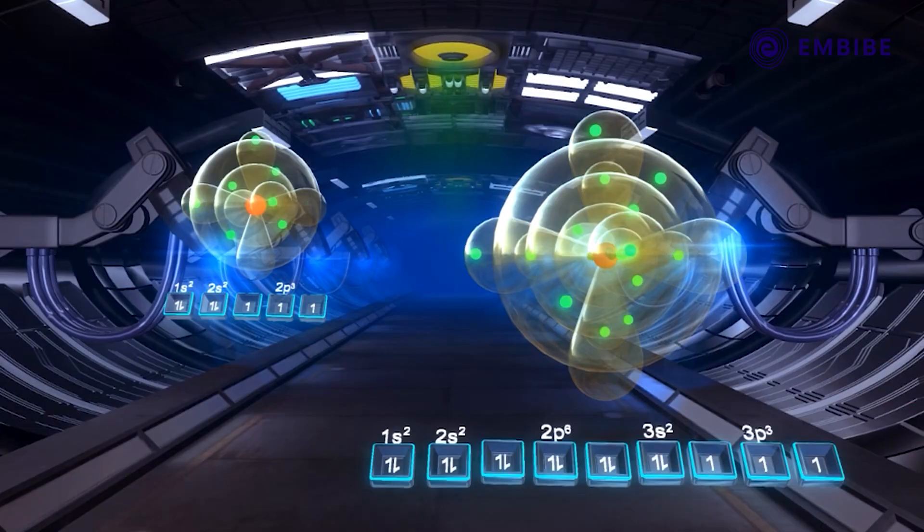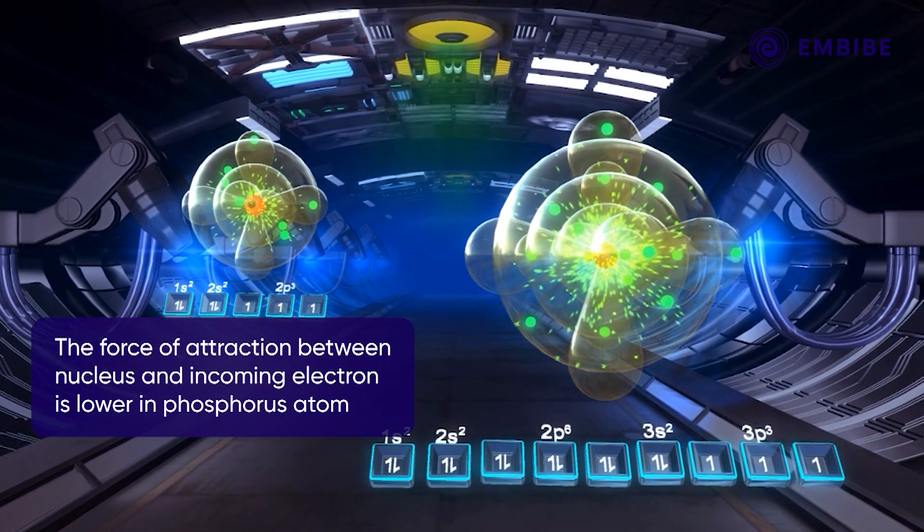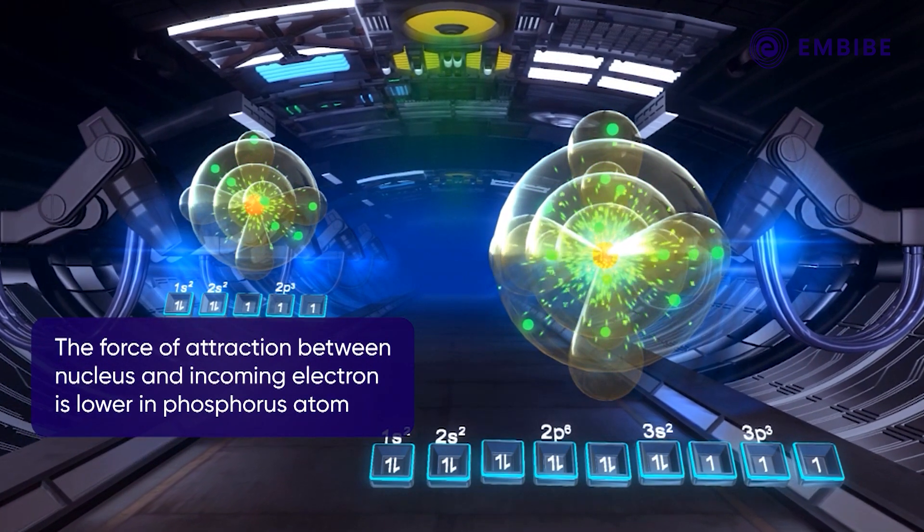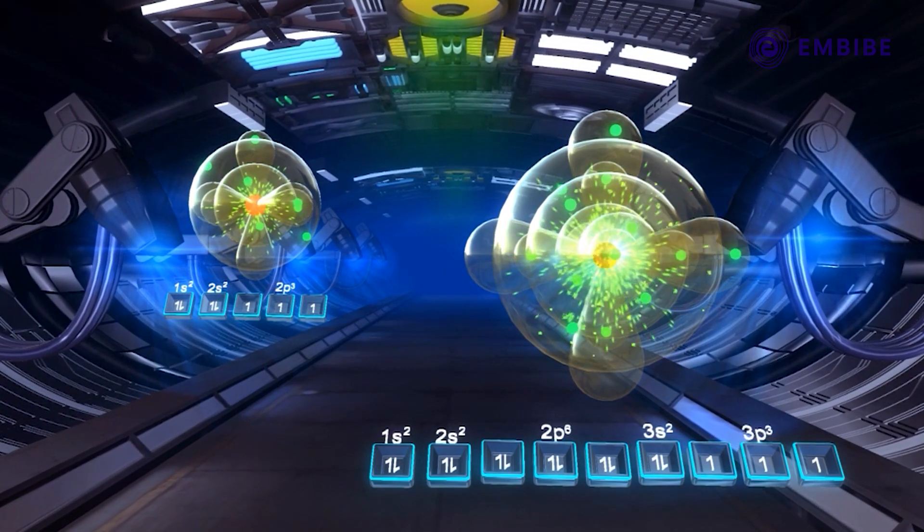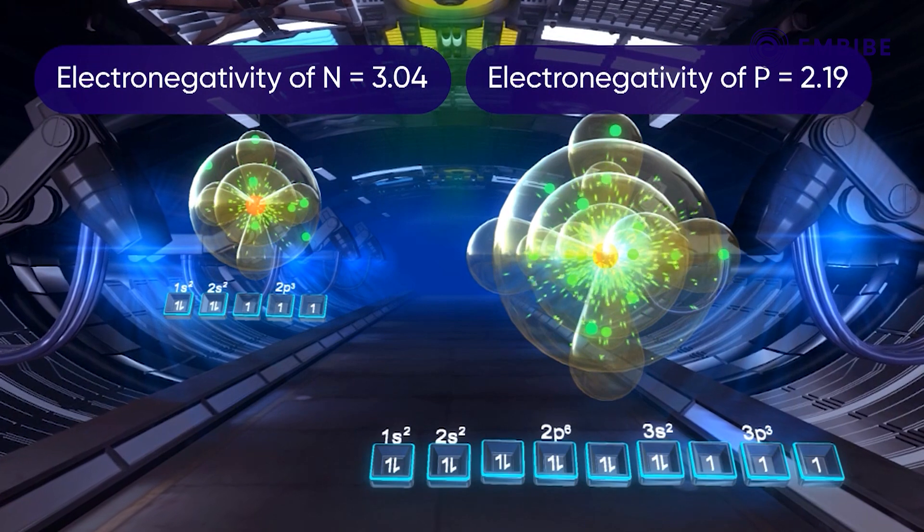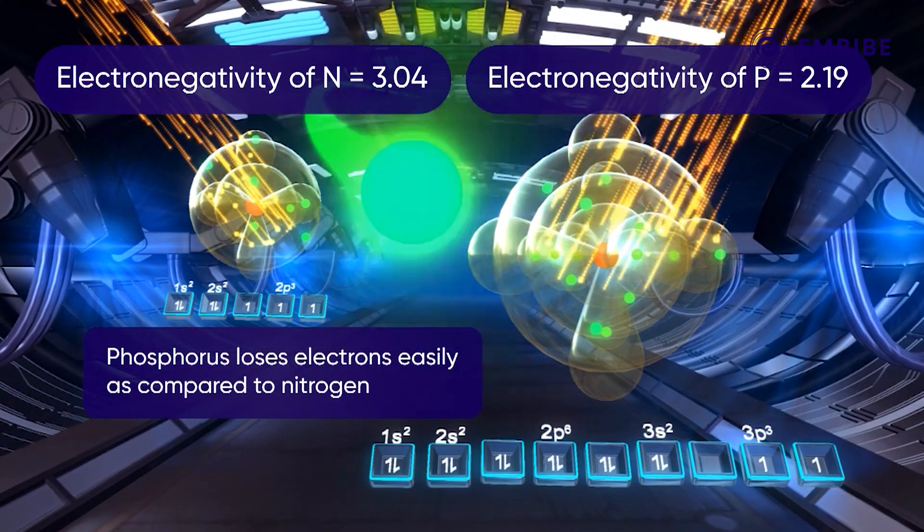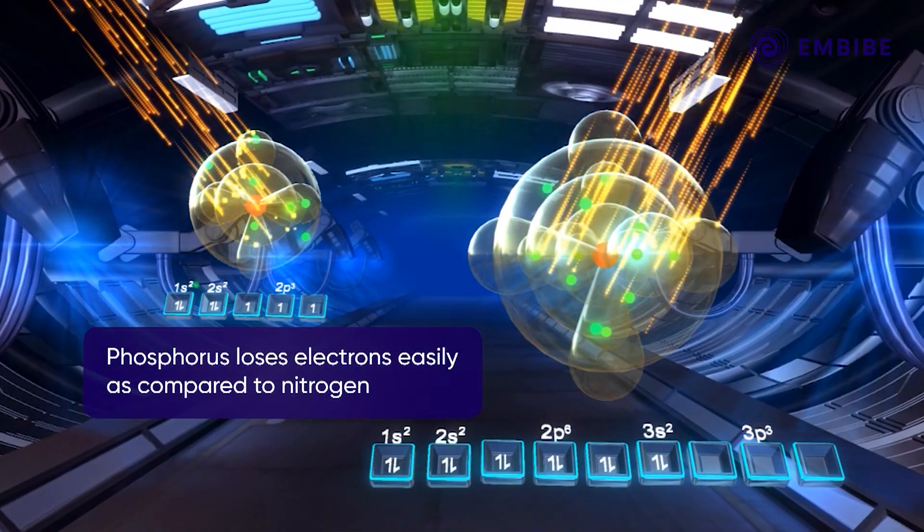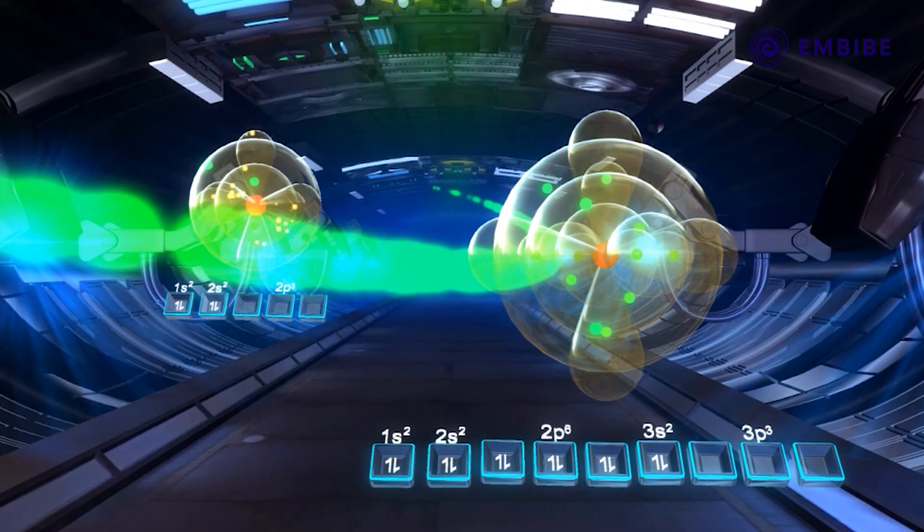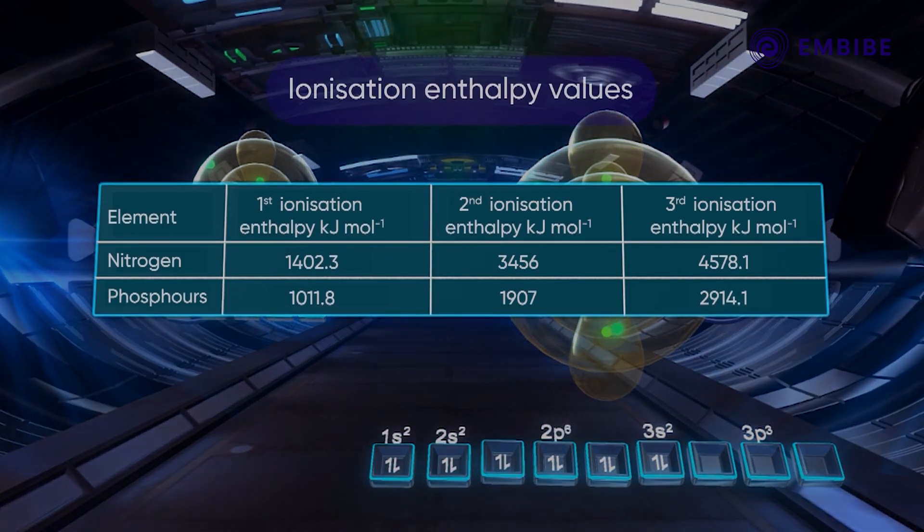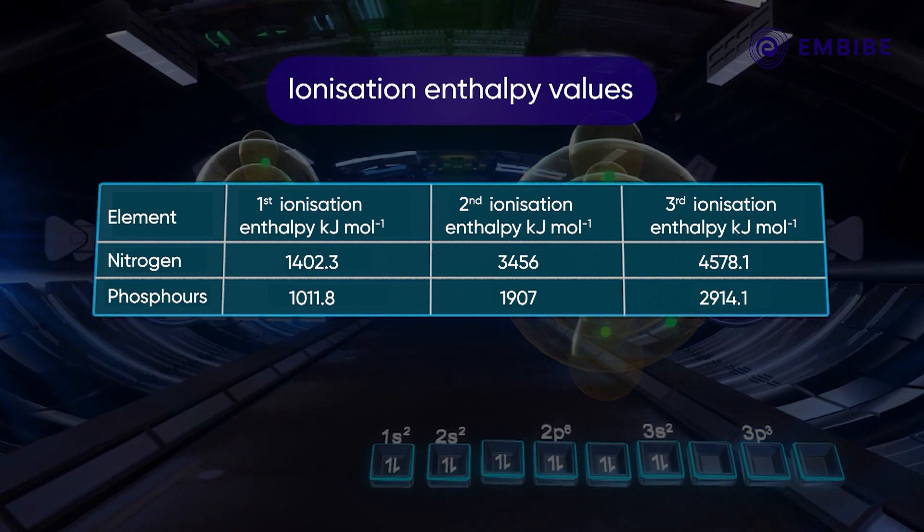As a consequence, the attractive force exerted by the nucleus on the incoming electron is lower in the phosphorus atom. In other words, the electronegativity of phosphorus is lower. These properties make it easier for phosphorus to lose electrons as compared to nitrogen. This can also be verified by the ionization enthalpy values for nitrogen and phosphorus.